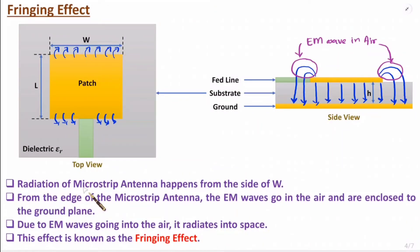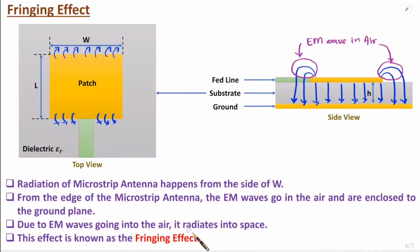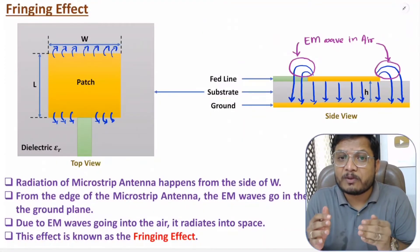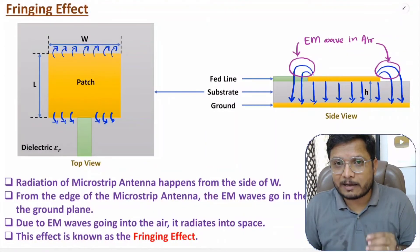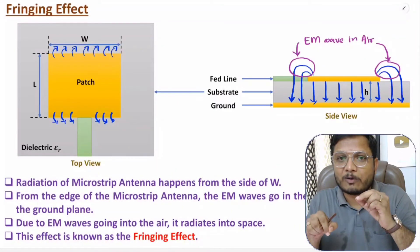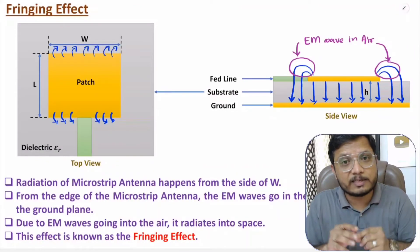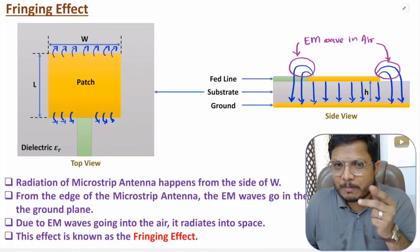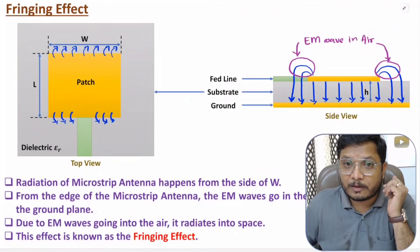From the edge of the microstrip antenna, EM waves go into air and then enclose back to the ground plane. As these EM waves go into air they radiate in space, and that effect is called fringing effect. Fringing effect explains how microstrip radiates in space — fields go into air and then get grounded to the ground plane. The portion of field going into air is what happens because of fringing.